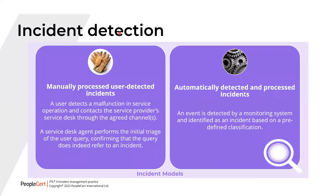The first activity is incident detection. We will look at both manually detected and automatically detected incidents, which represent the two major options, though there may be other ways to detect incidents as well. When manually detected by a user, the user identifies a malfunction in service operation and contacts the service provider's service desk through agreed channels. The service desk agent then performs initial triaging to confirm the query refers to an incident. If automatically detected, an event is identified by a monitoring system and classified as an incident based on predefined classification.